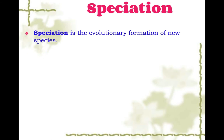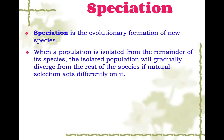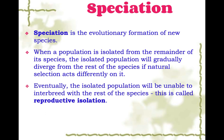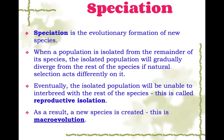So now let's talk about speciation. Speciation is the evolutionary formation of new species. When a population is isolated from the remainder of its species, the isolated population will gradually diverge from the rest if natural selection is acting differently on it. If a species gets divided in two and they have different environmental factors acting on them, they're going to evolve differently. Eventually those two populations are not going to be able to interbreed anymore — they are said to be reproductively isolated — and as a result, a new species is created. This is macroevolution: we're creating a whole new species, not just changes in frequencies of alleles within a species.